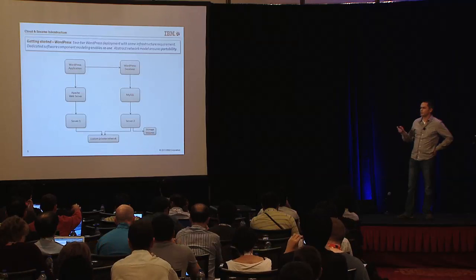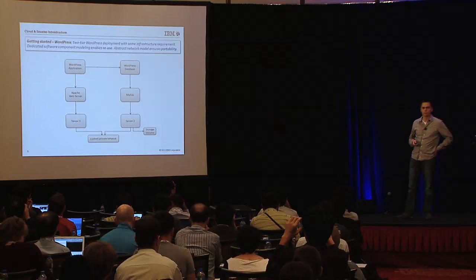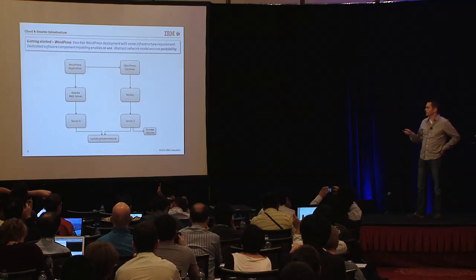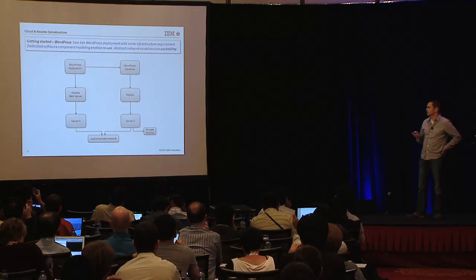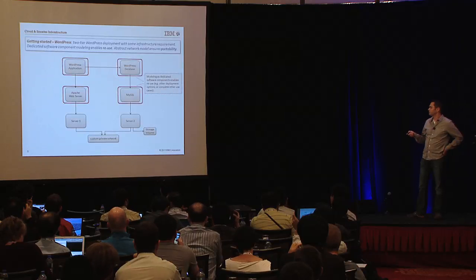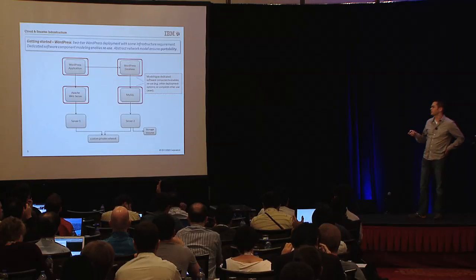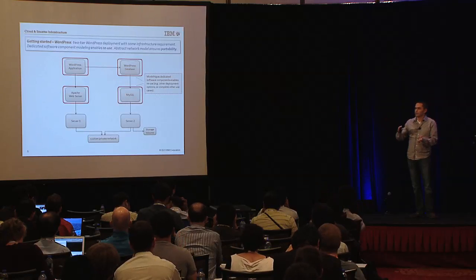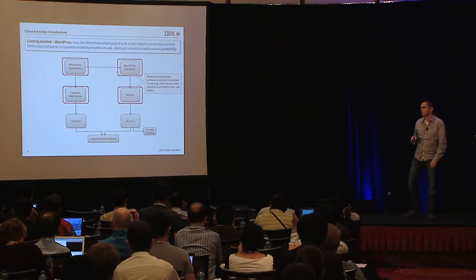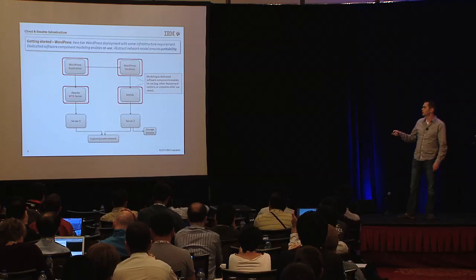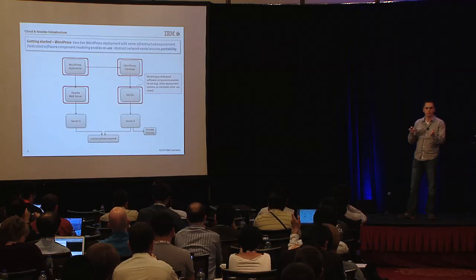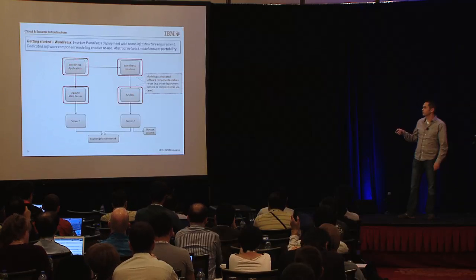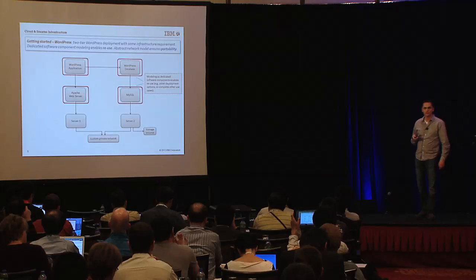The first example is the famous WordPress example, known to everyone in the Heat community. It already allows us to highlight what we think is important. For software orchestration, it's important to have software components modeled explicitly instead of having everything collapsed into a script inlined into instance user data, because that allows us to reuse things. We can reuse an Apache module or MySQL in another use case, and it makes sense to separate it from the actual application workload for a higher reuse factor.